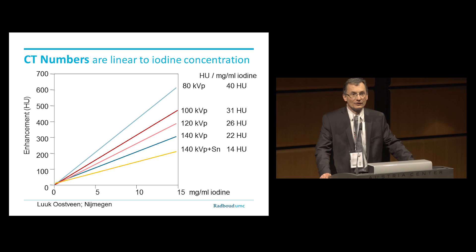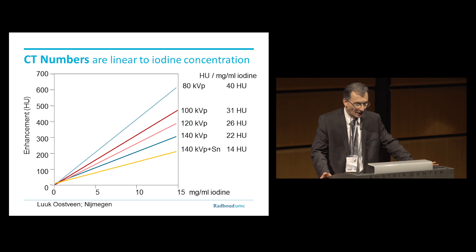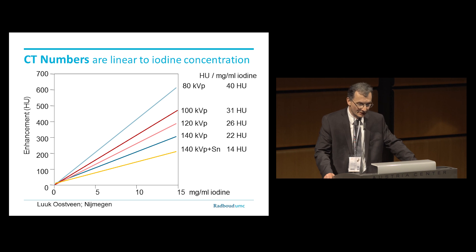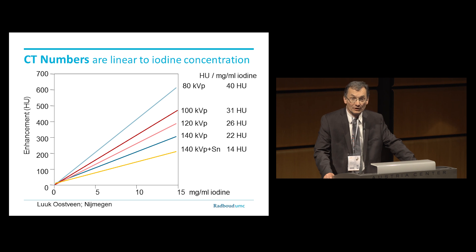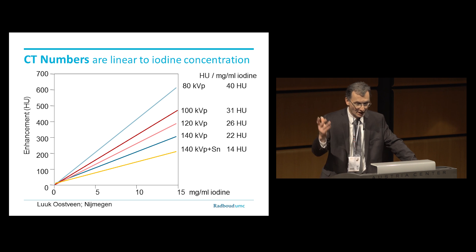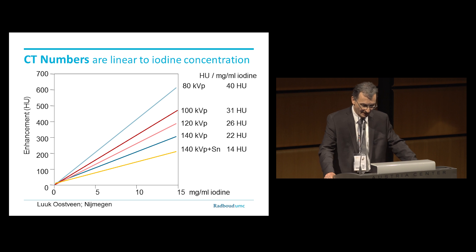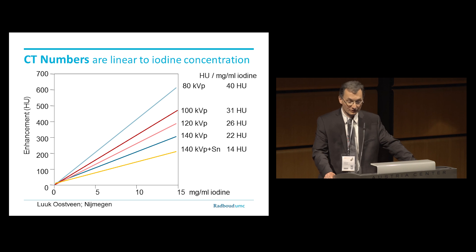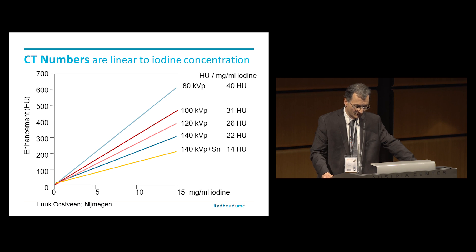The iodine concentration is directly proportional to the CT numbers, and the lower KVP obviously gives you more attenuation per milligram iodine. For example, at 80 KVP, that's about 40 Hounsfield units per milligram per milliliter concentration. And at 140 KVP, that is about 22 Hounsfield units. If you take an additional tin filter, this can go down as little as 14 Hounsfield units.